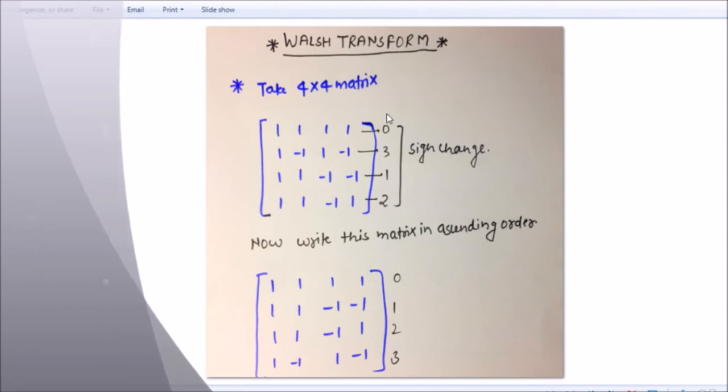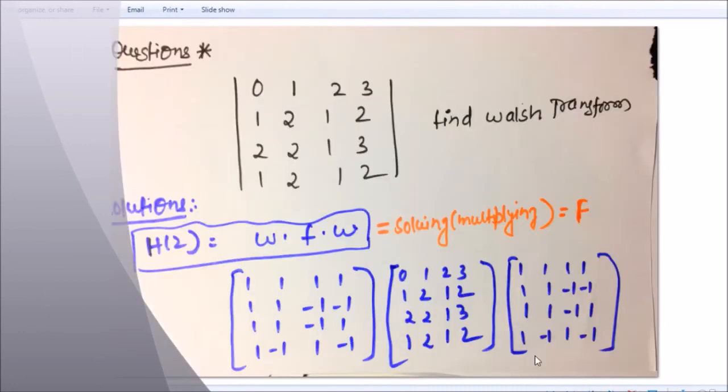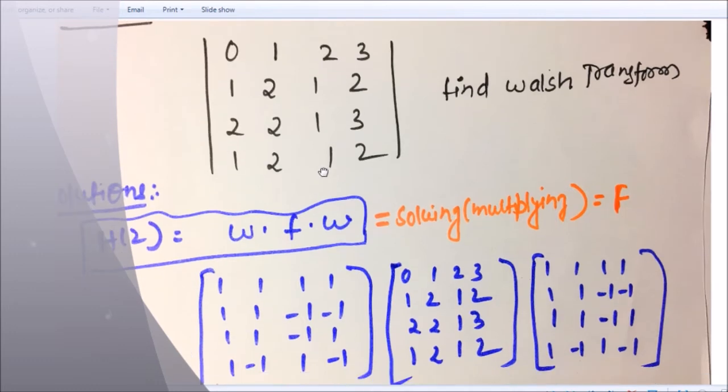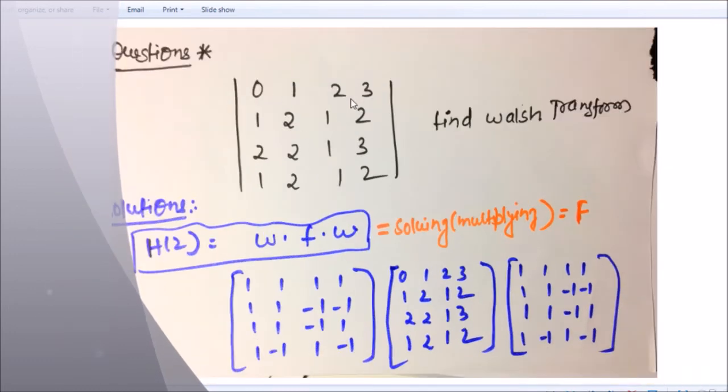Let's see next. So here is your question: zero one two three, one two one two, two two one three, one two one two. Find the Walsh transform. The question is asking to find Walsh transform.